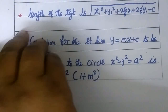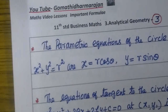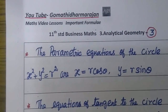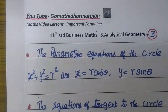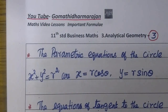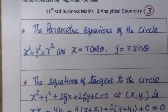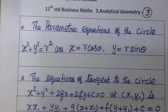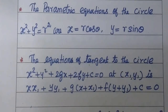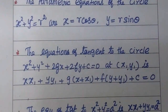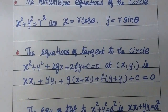Coming to the next one: the parametric equation of the circle. Then the equation of the tangent to the circle: xx1 plus yy1 plus g(x plus x1) plus f(y plus y1) plus c equal to 0.